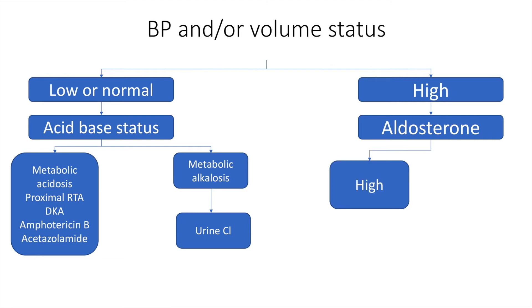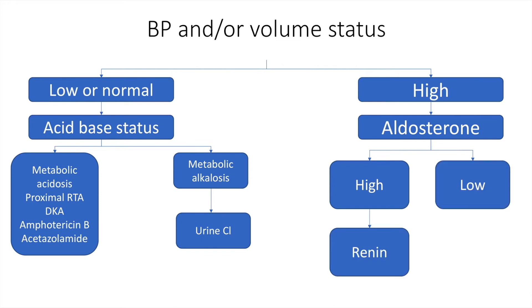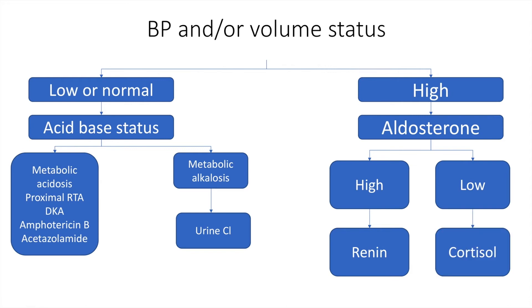If the patient's blood pressure is high or they are in a state of fluid overload, we must look at aldosterone. If aldosterone is high, we can think of a hyperreninemic state such as renin-secreting tumors. If aldosterone is low but the patient still has high blood pressure or fluid overload, we must consider the cortisol axis.